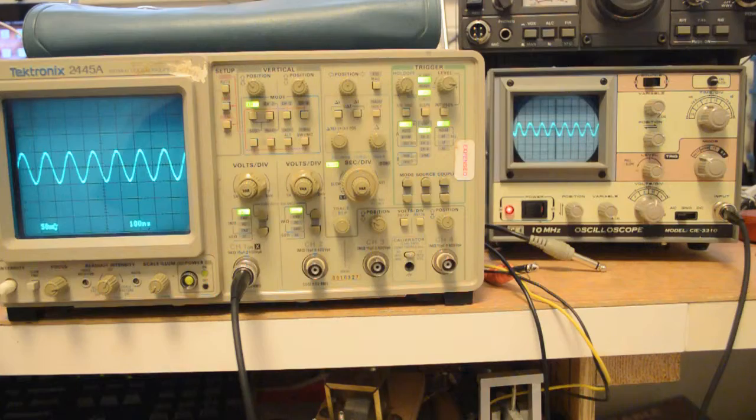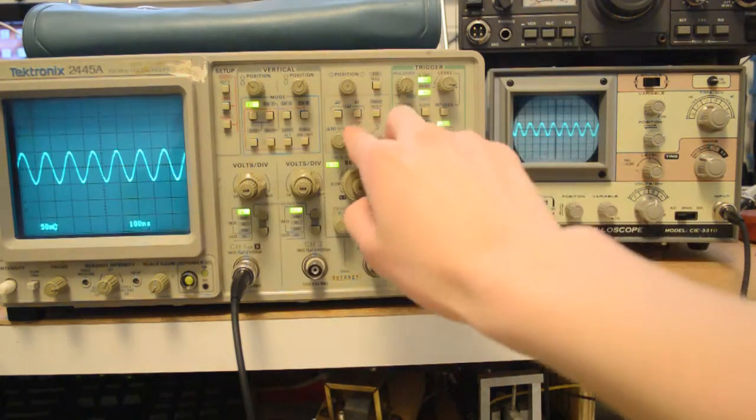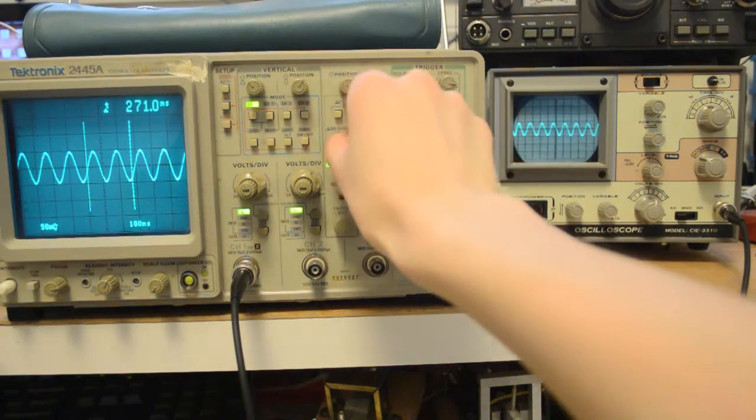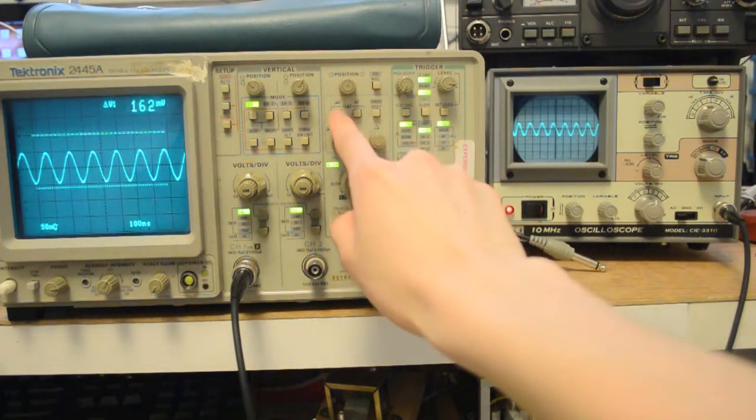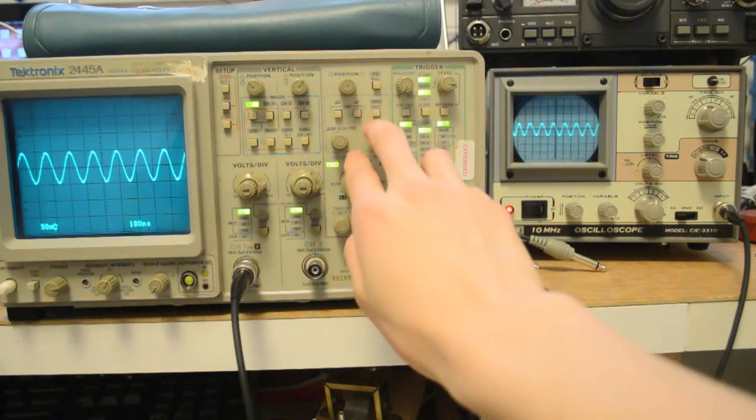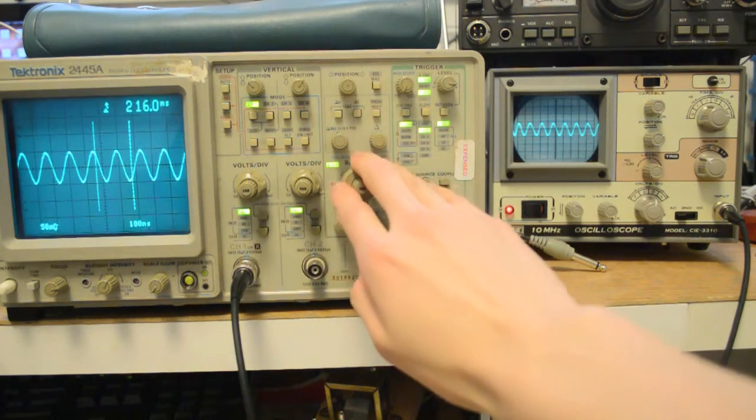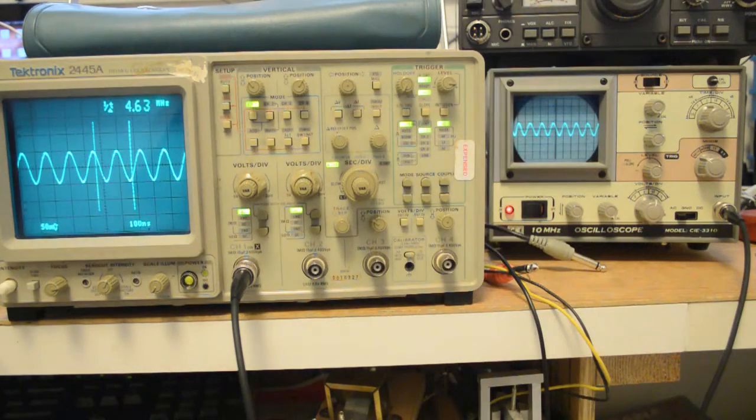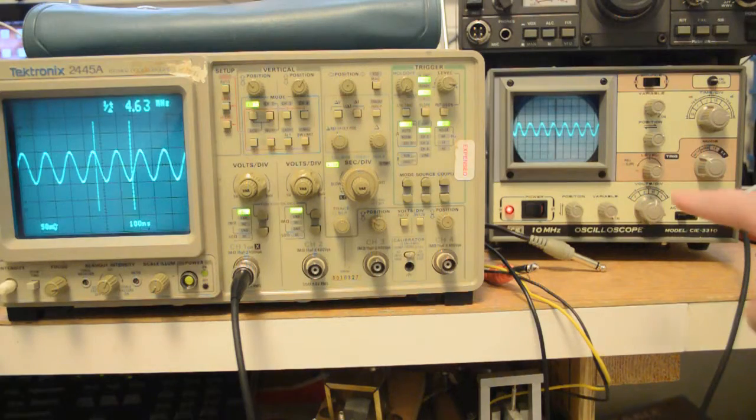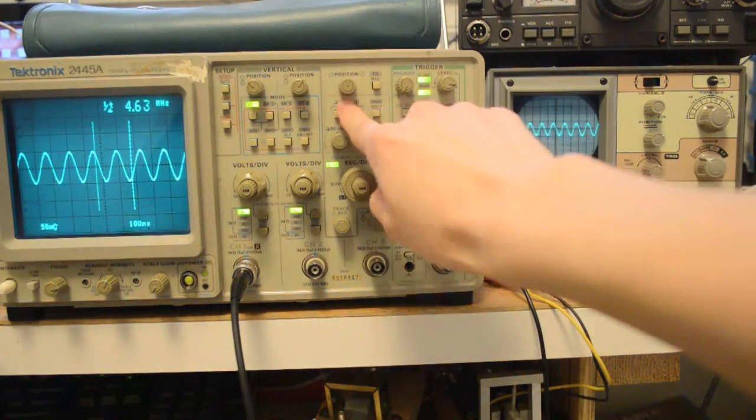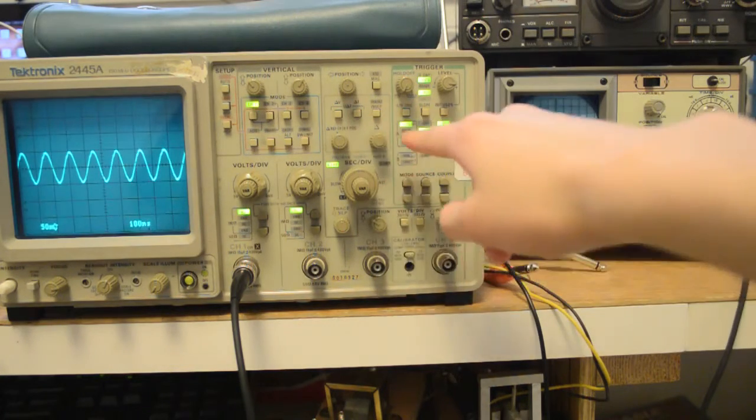And next, we have a ton of extra measuring options. So you can have delta Ts, and you can play with that. You have a delta V, and you can play with that. And you also have a... Press both at the same time. You also have a frequency measurement. There we go. This obviously has none of that fancy stuff. And then turn it off. Just press the button twice.